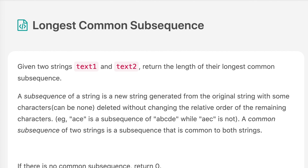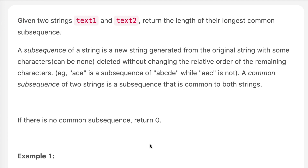The question says: you are given two strings text1 and text2, return the length of the longest common subsequence. A subsequence of a string is a new string generated from the original string with some characters — and it can be none — deleted without changing the relative order of the remaining characters. If there is no common subsequence, return 0.